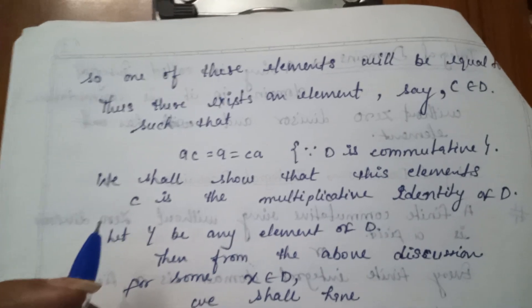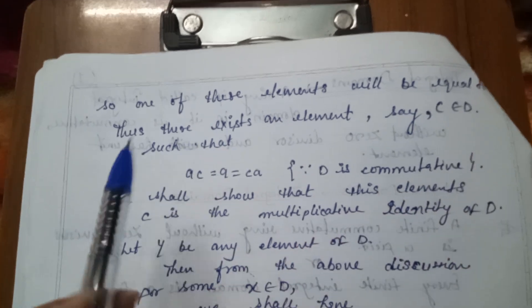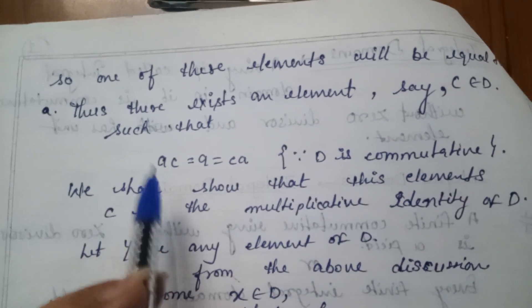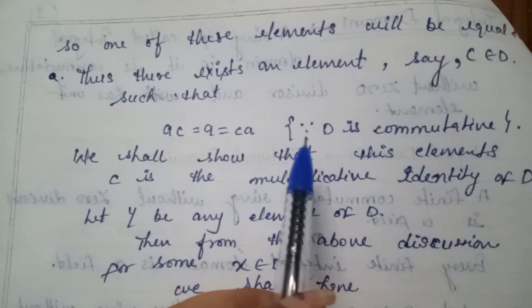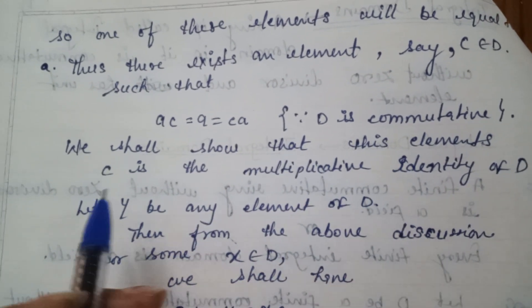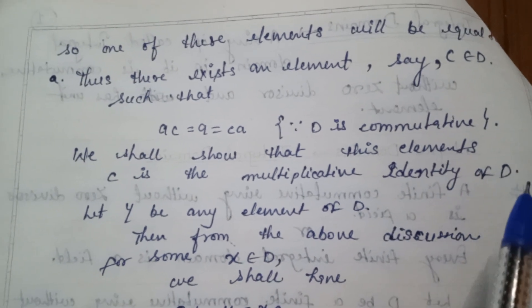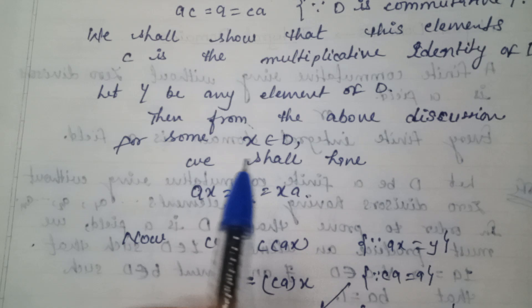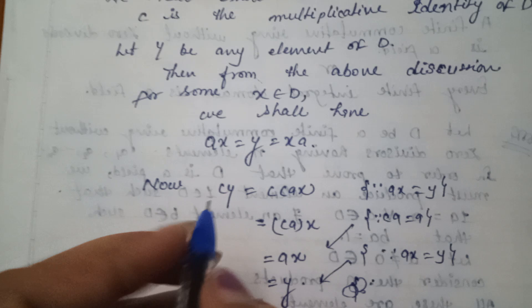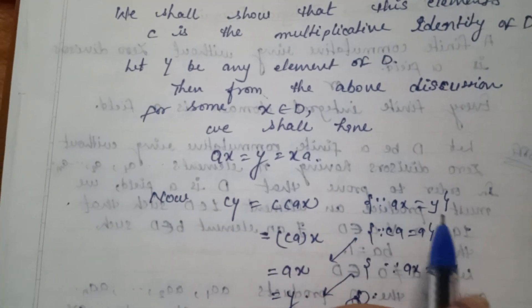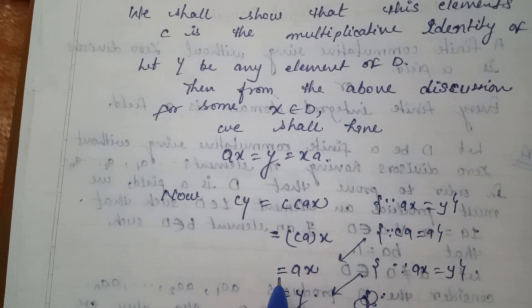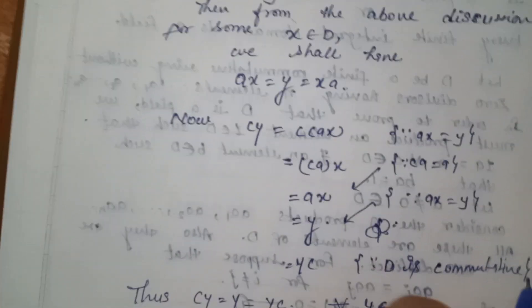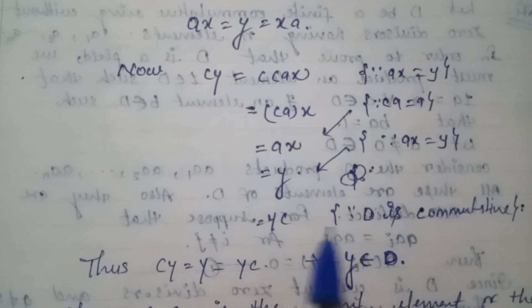Therefore A·A1, A·A2, ..., A·AN are all N distinct elements of D placed in some order. One of these elements will equal A, so there exists an element C in D such that A·C = A = C·A. Since D is commutative, we shall show that C is the multiplicative identity of D. Let Y be any element of D; then for some X in D we have A·X = Y = X·A. Now C·Y = C·(A·X) = (C·A)·X = A·X = Y, which equals Y·C since D is commutative.